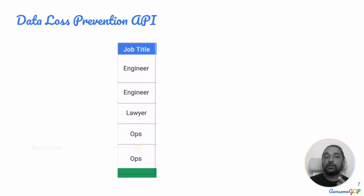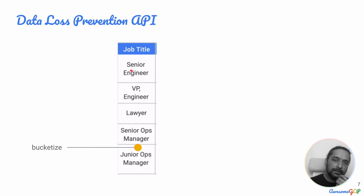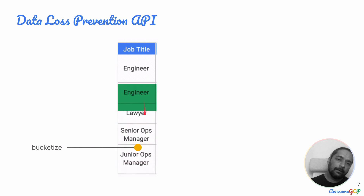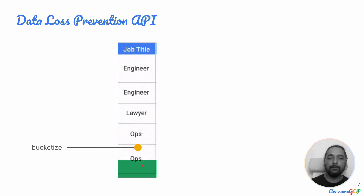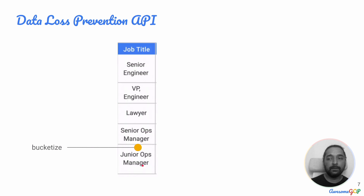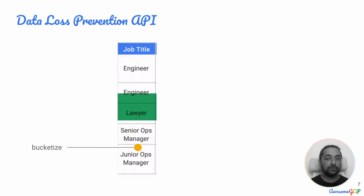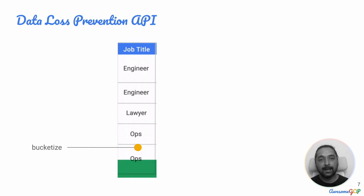Another option is to bucketize the data. Originally this was 'senior engineer' and 'VP engineer' but after bucketizing, you say this is just part of the engineering team. Instead of having a 'senior ops manager' and a 'junior ops manager' that might be able to specifically identify an employee within the company, we bucketize and say this is somebody in the ops team but we have no further information. So again we have anonymized the data and can't figure out who this exact person is.